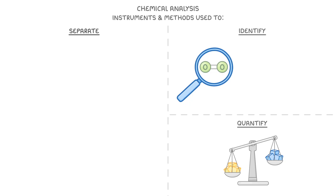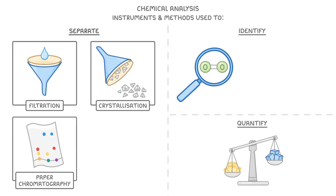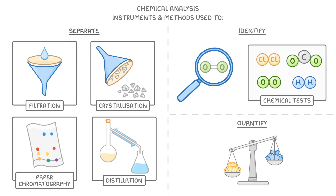Over the next few videos, we'll be taking a look at some examples of these, like paper chromatography for separating different pigments from a mixture, filtration and crystallisation to isolate solids from liquids, and distillation to separate out different liquids. We'll also look at some chemical tests, including the ones to identify four common gases.